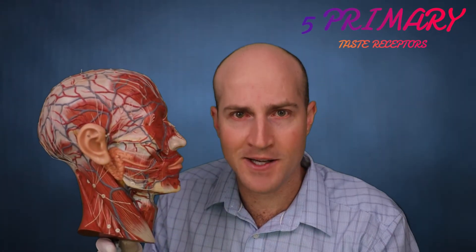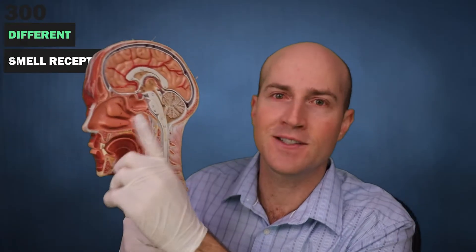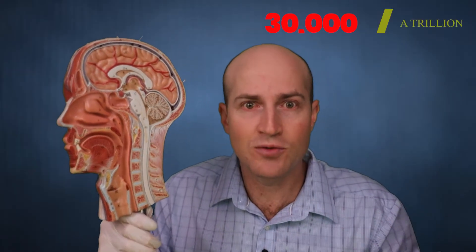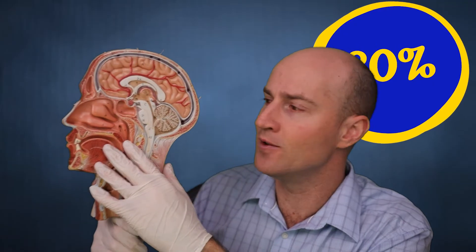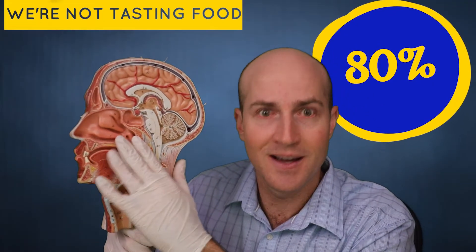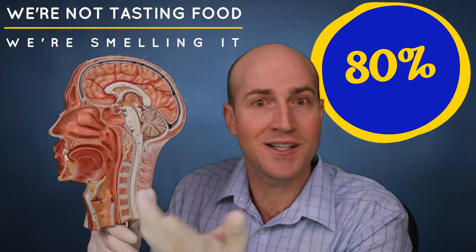The five primary taste receptors are far outweighed by over 300 different smell receptors in our noses, and these can collectively distinguish somewhere between 30,000 to a trillion different smells. There's a wide variety in the literature. Now, it's hard to give a precise number, but probably around 80% of the flavors in our foods come directly from our noses. We're not tasting food, we're smelling it.